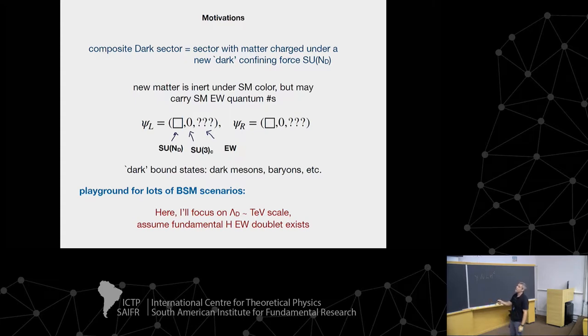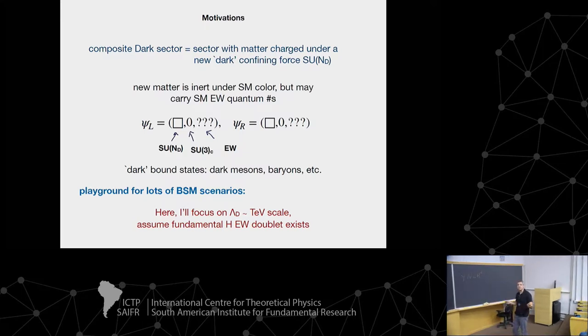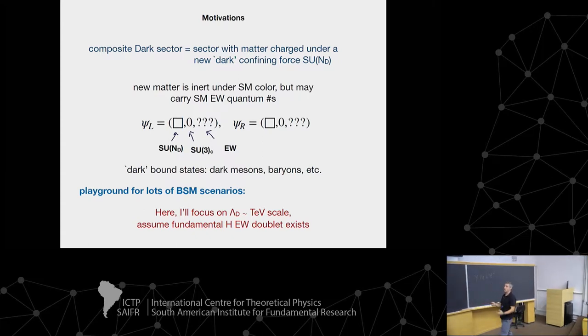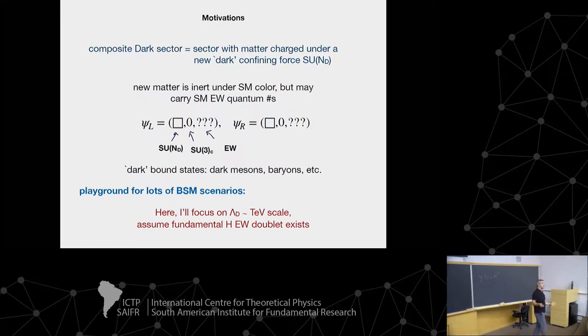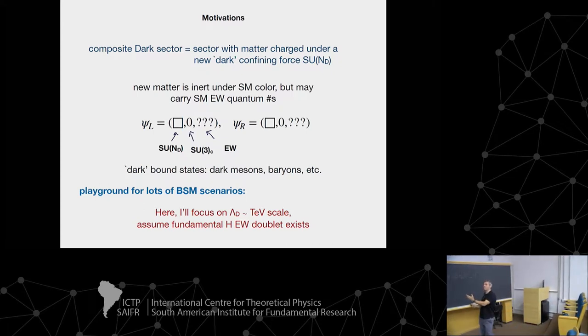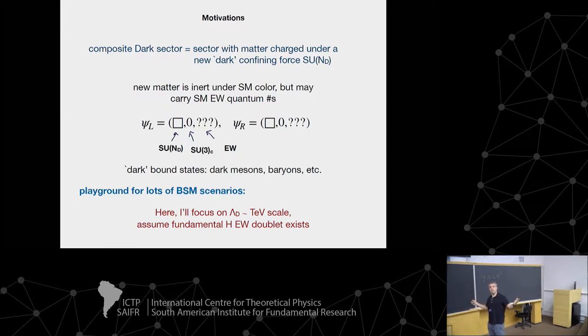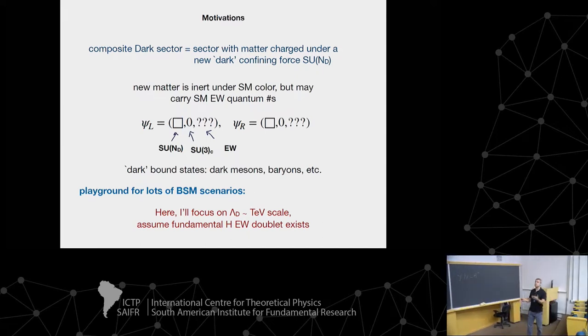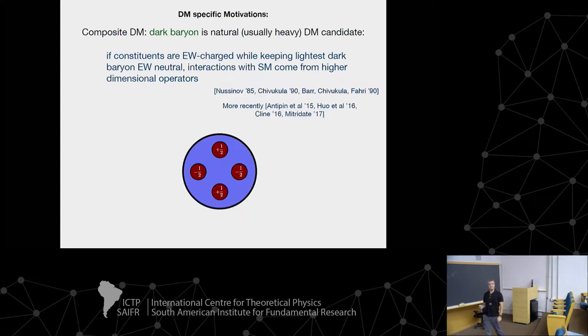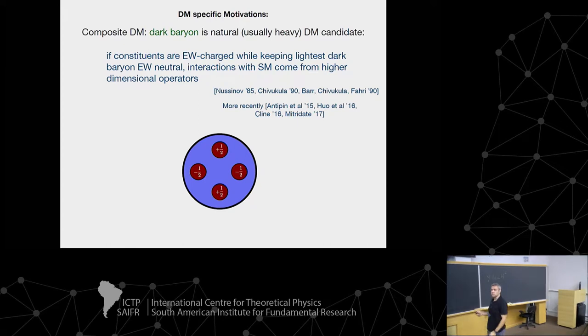One important parameter is where this gauge group becomes strong. What I'm going to focus on is this thing is essentially at the TeV scale. And while you could come up with composite scenarios that are trying to explain the hierarchy, make the Higgs as a composite, that's not my goal here. I'm not a composite Higgs at all. So I'm going to imagine that there is a fundamental Higgs doublet in addition to this stuff.